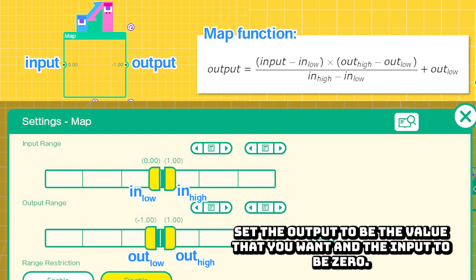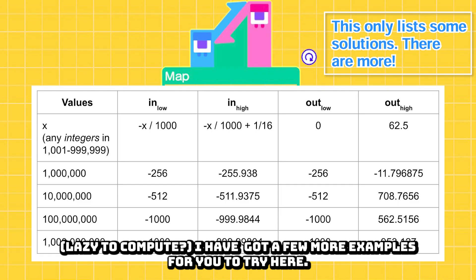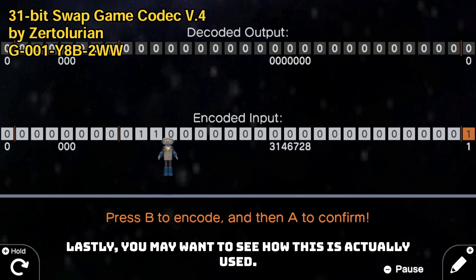Set the output to be the value that you want and the input to be zero. Find the missing input and output ranges. I have got a few more examples for you to try here.